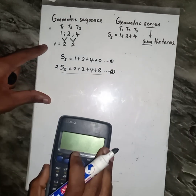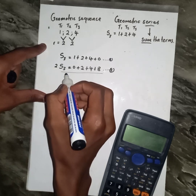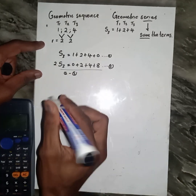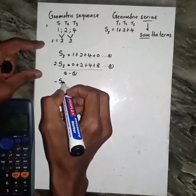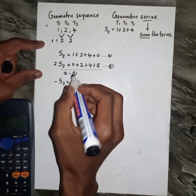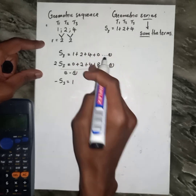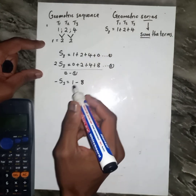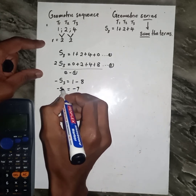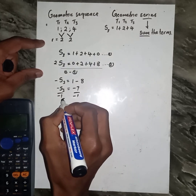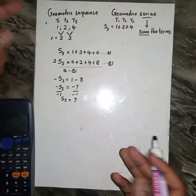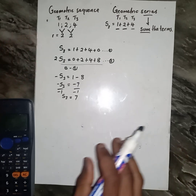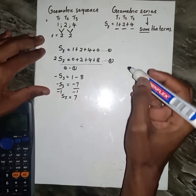Draw a line — we have Equation 1 and Equation 2. Now let's do Equation 1 minus Equation 2. On the left: S minus 2S gives negative S. On the right: 1 minus 0 is 1; 2 cancels 2; 4 cancels 4; then 0 minus 8 gives negative 8. So negative S equals negative 7, meaning S3 equals 7. And indeed, 1 plus 2 plus 4 equals 7.